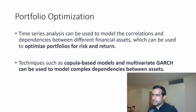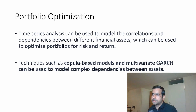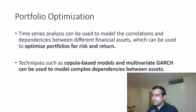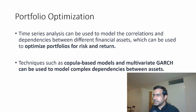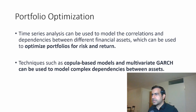For example, it could be a simple relationship like the stock price of Microsoft being closely related to the movement of Apple or Google. Whether they are co-integrated can be determined using time series models, and then you can build a suitable trading strategy based on that dependency between the two financial assets.